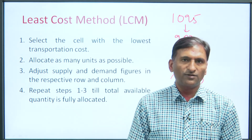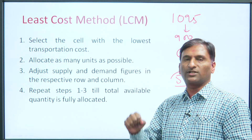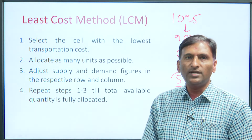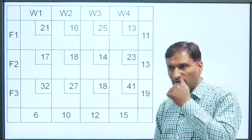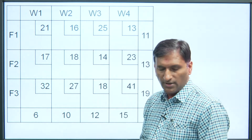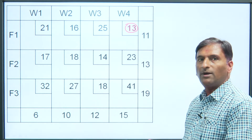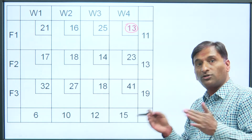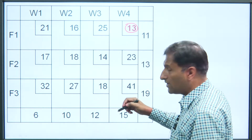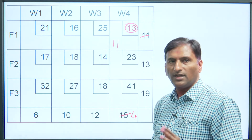Applying the Least Cost Method on the same problem: the least cost cell overall is F1→W4 with cost 13. So we start there — not at the north-west corner. We allocate the minimum of supply at F1 (11) and demand at W4 (15), which is 11. F1 is exhausted; W4 has 4 remaining. Since F1's row is now fully used, we mark those cells as blocked.